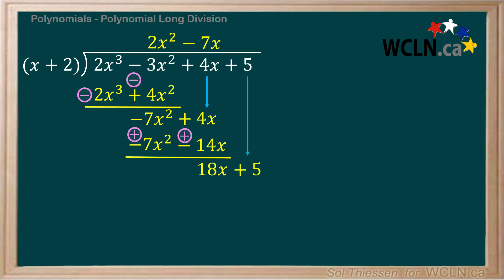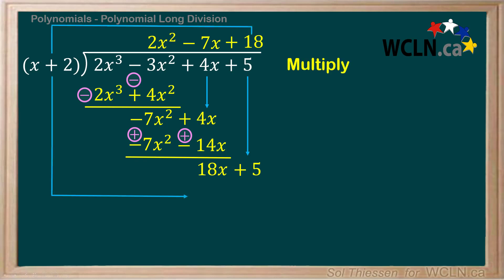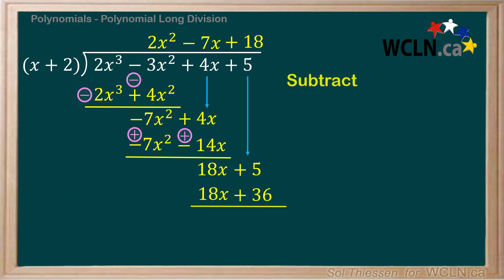Now we carry down the next term, the plus 5 from above. Again we ask ourselves: what do we multiply x by to get 18x? The answer is 18, which we write above the long division sign. Now we multiply our divisor by 18 and write the product underneath what remains of the dividend. 18 times x gives us 18x, and 18 times 2 gives us 36. Next we subtract this product from what remains of the dividend. Remember that the subtraction will cause the signs of both terms to change, so let's write and circle the new signs. 18x minus 18x gives us 0, as we'd expect, and 5 minus 36 is negative 31. Again the result of our first subtraction is 0, which means we're on the right track.